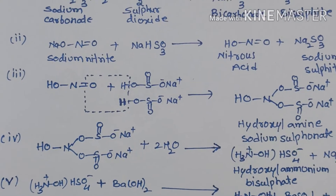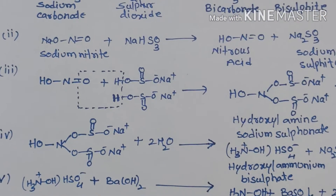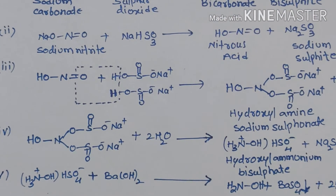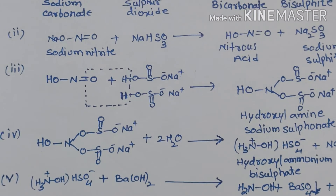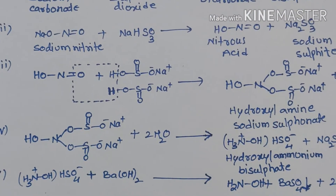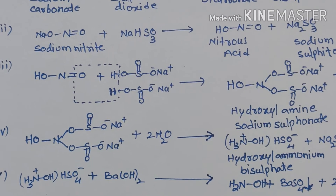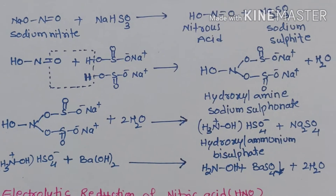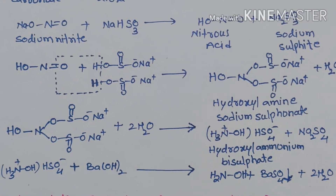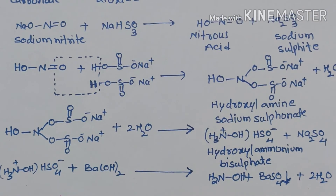In the fifth step, hydroxylamine ammonium bisulfate is treated with barium hydroxide in order to remove the sulfuric acid and to separate the hydroxylamine. The sulfate is removed in the form of barium sulfate as a precipitate.